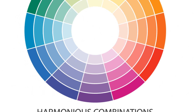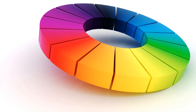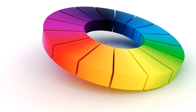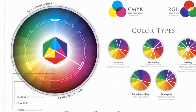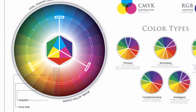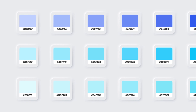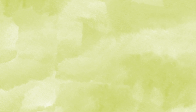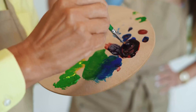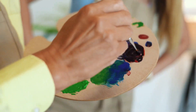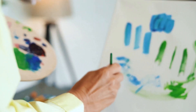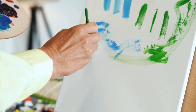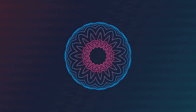The color wheel is an essential tool that guides the creation of harmonious color combinations known as color schemes, helping visualize how different colors interact. Monochromatic schemes use different values of a single hue, creating unity and sophistication. Analogous schemes use adjacent colors on the wheel, evoking harmony and tranquility. Complementary schemes use opposite colors, creating maximum contrast and visual impact.